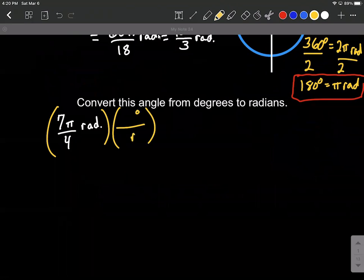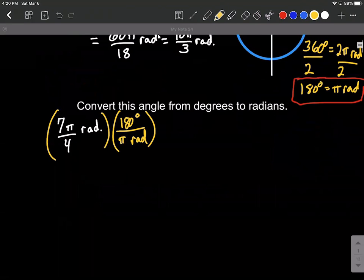But we're going to set it up so that our radians are currently in the numerator, and we want to end up with degrees. So you want to bury these down in the denominator, so that eventually radians is going to cancel out one in the numerator, one in the denominator. So again, we have 180 degrees equals pi radians.